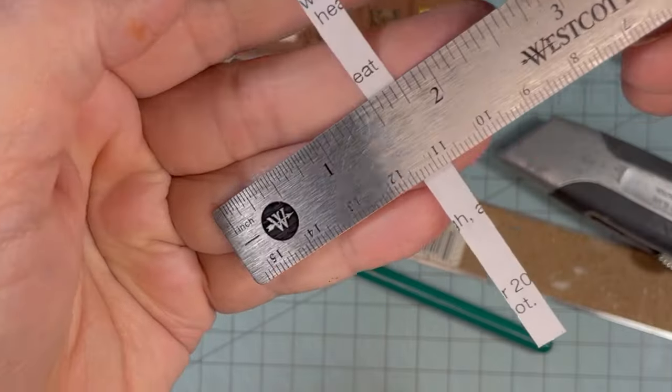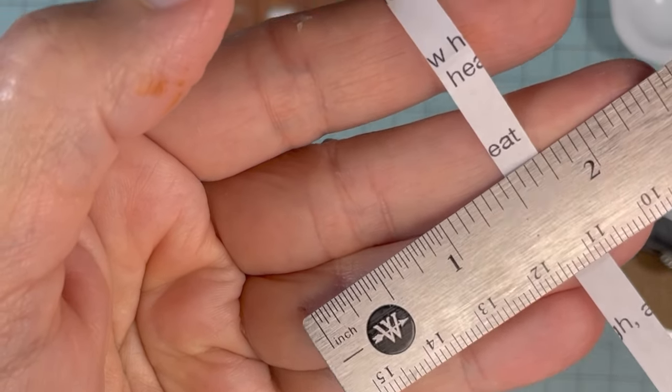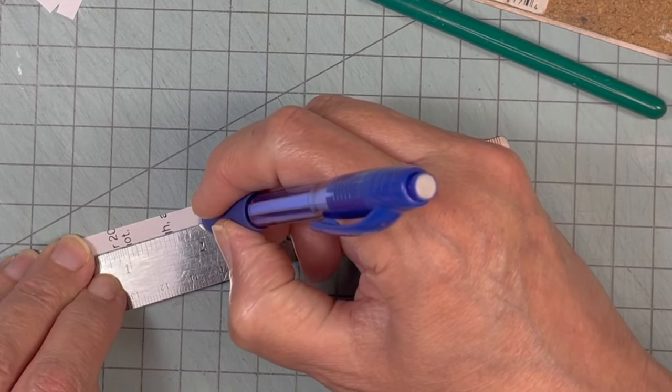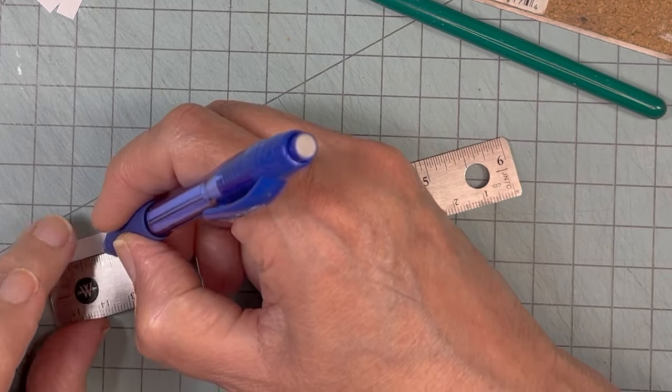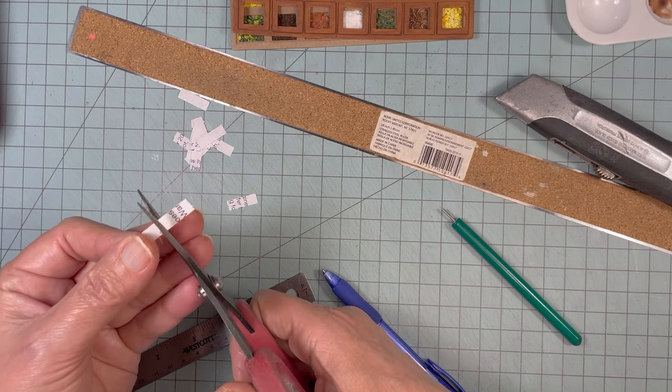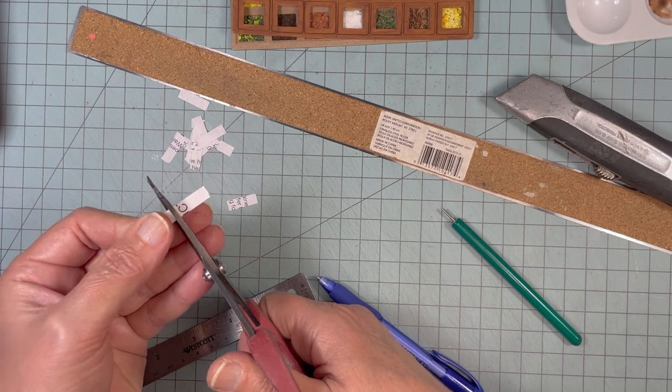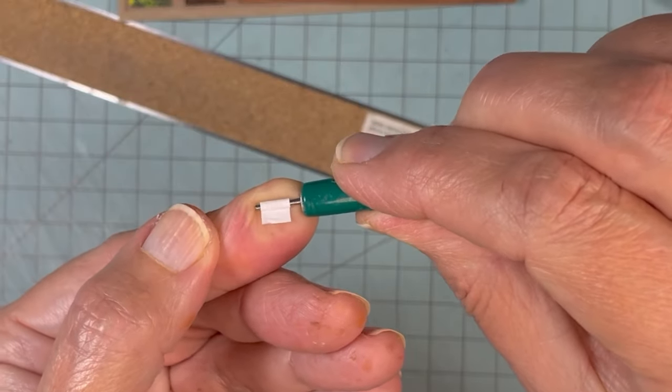I cut a strip of paper a quarter of an inch wide. And I made little marks on the strip every half inch or inch, I can't remember. I'm creating little handles to glue onto the front.